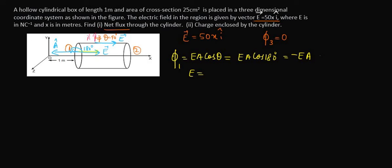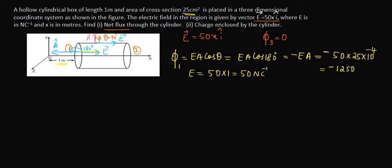The electric field value is 50 times x. On the first surface, x = 1 meter, so E = 50 × 1 = 50 Newton per coulomb. Substituting into the flux formula: phi 1 = minus 50 times 25 × 10⁻⁴. This gives minus 1250 × 10⁻⁴ Newton meter squared per coulomb, which is the electric flux on the first surface.